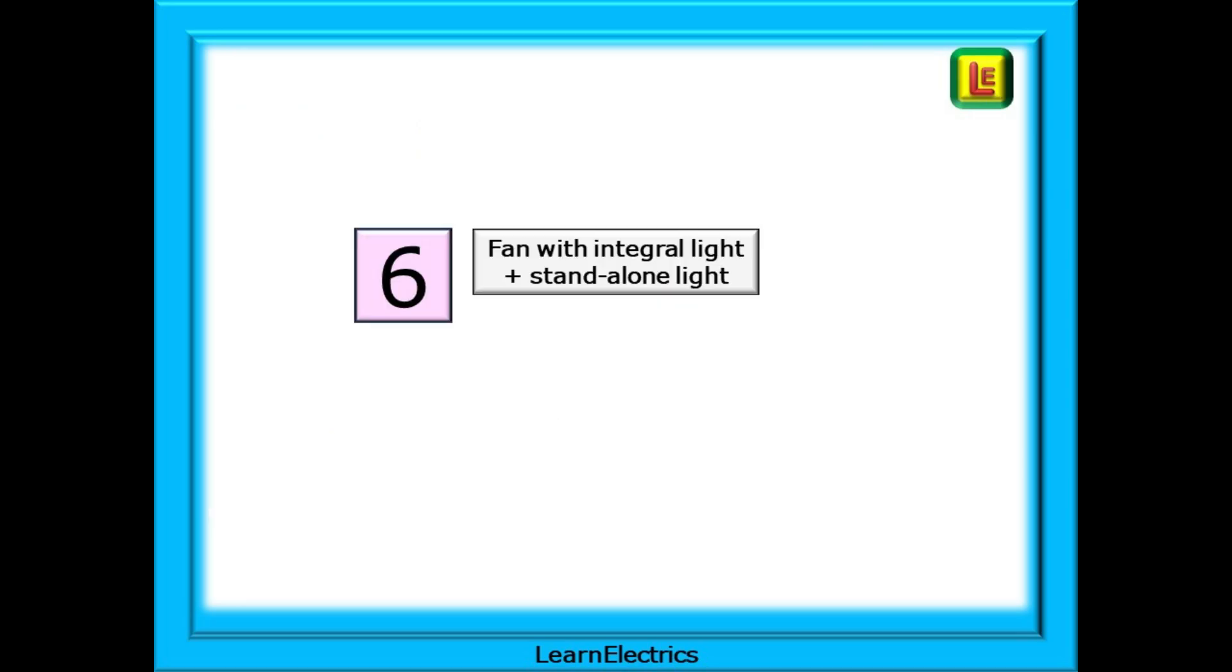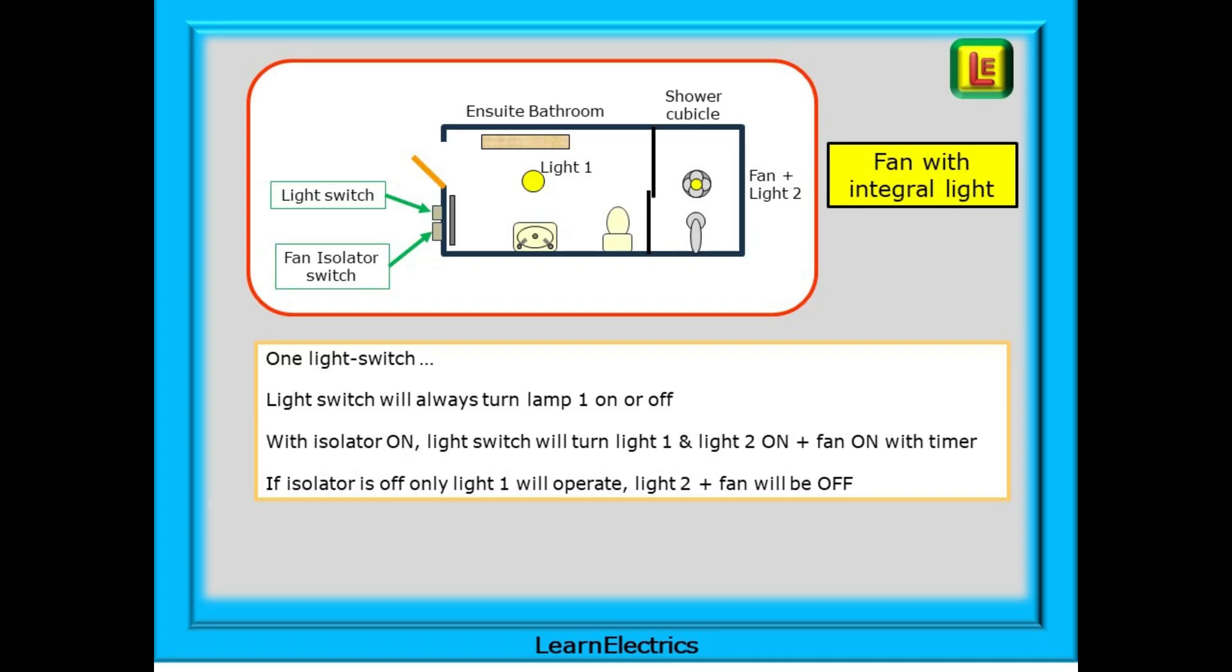Another method that you will come across is a bathroom with two lights. One light is standalone and the second is integrated into the fan. The sketch shown gives a basic layout of this method in an ensuite bathroom. One light is positioned more or less central over the wash basin and the second light is integrated into the fan that is installed in the shower cubicle. Only one light switch was used in this installation. The light switch will always turn lamp one on or off. With the isolator on the light switch will turn light one and light two on and the fan and timer function also. If the isolator is off only light one will operate with light two and the fan both off.